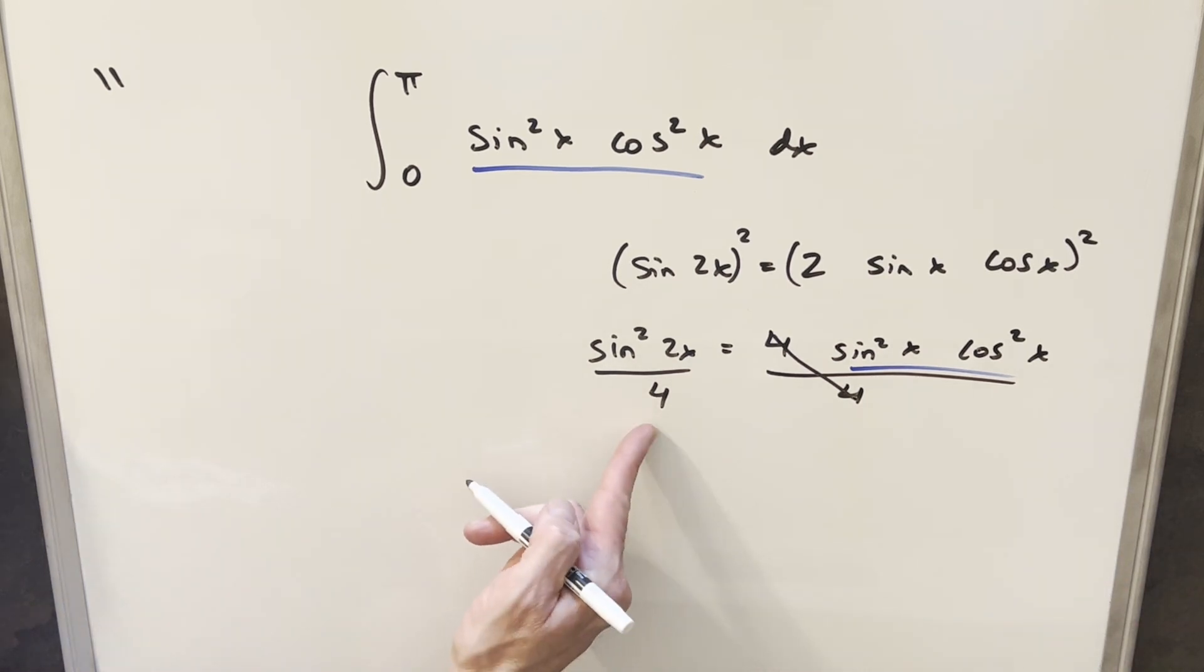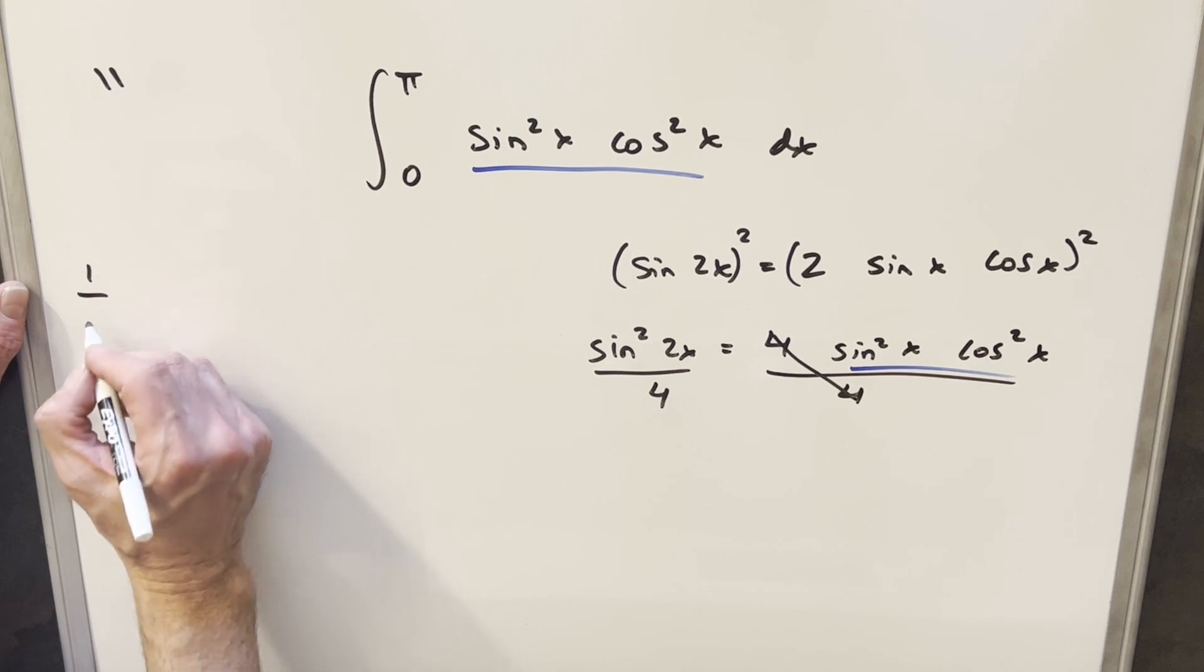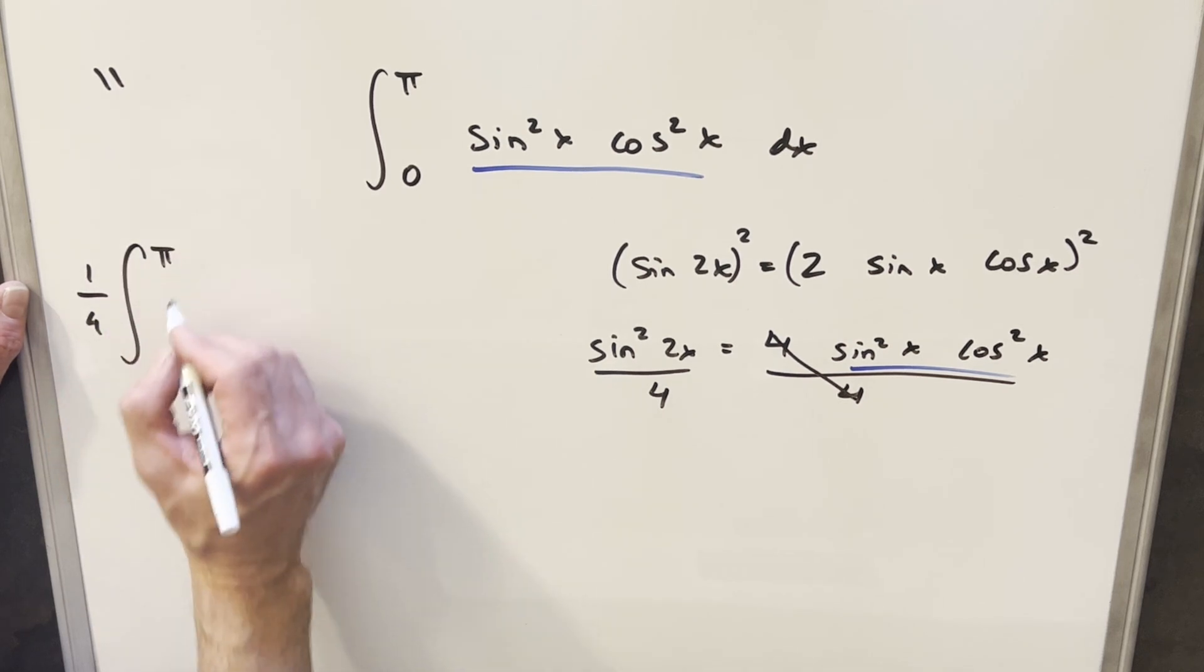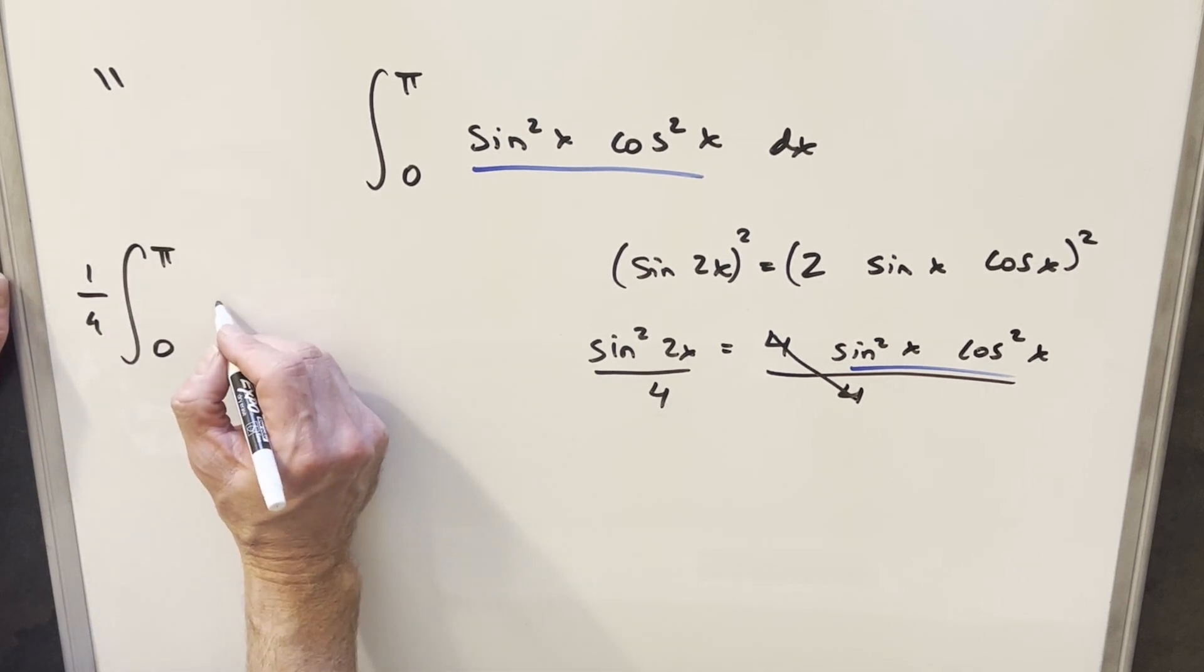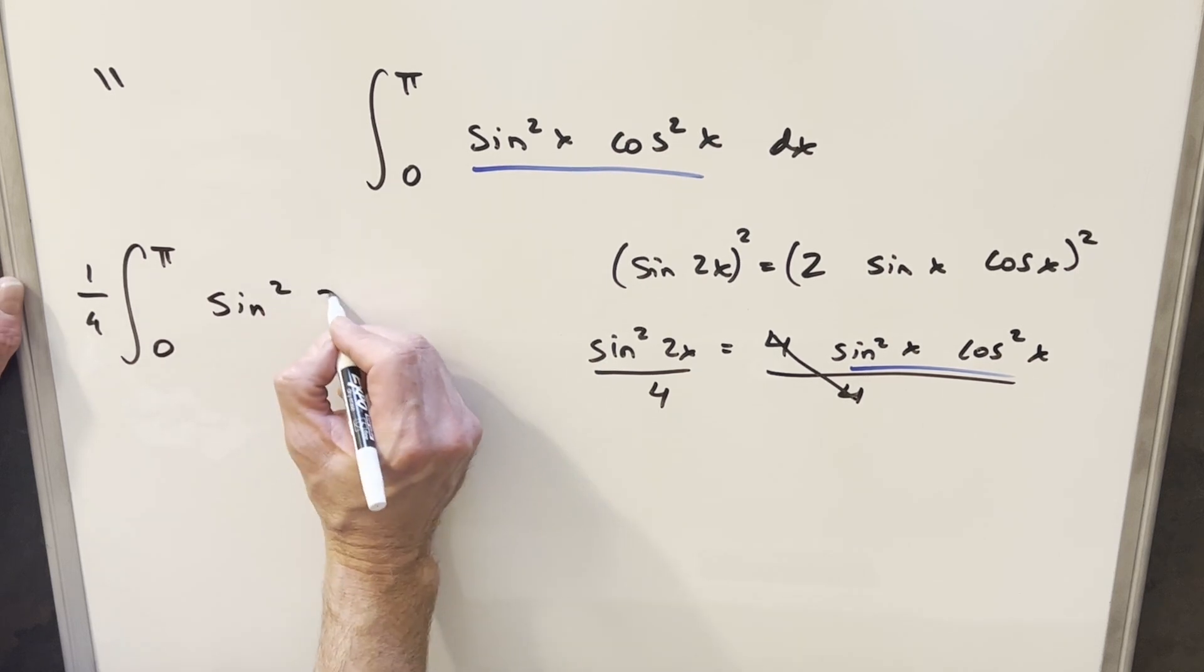So I'll rewrite the integral, but for the 1 over 4, I'm going to take that outside of the integral and write it this way. So we're going from 0 to pi, and we'll have sine squared 2x.